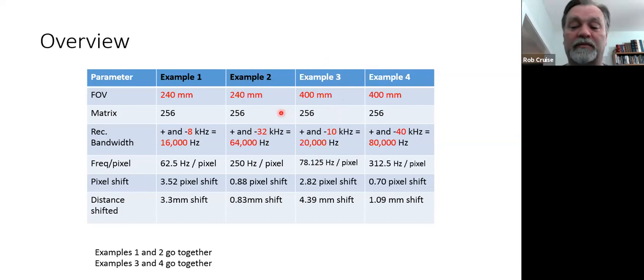Examples three and four go together. So we have now changed our field of view to 400 in both examples. We still have our same matrix size. Here we're going from 10 kilohertz to a 40 kilohertz bandwidth, so from narrow to wide again. So 20,000 kilohertz to 80,000 kilohertz. So we see our number of frequencies per pixel. We take that information and we find out what pixel shift we have. So our two answers here is for 400 millimeter at 10 kilohertz, you have a 2.8 pixel shift with a 4.39 millimeter shift on the anatomy that is represented in those pixels.